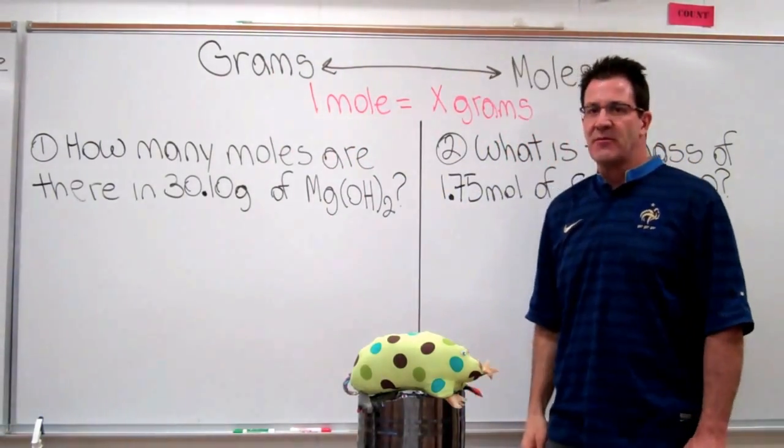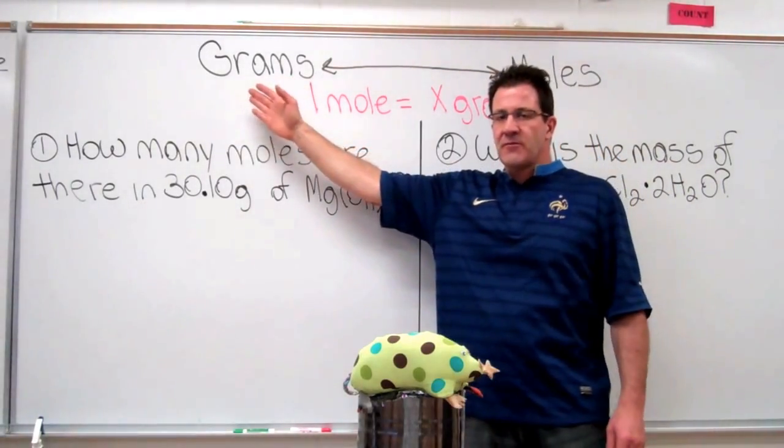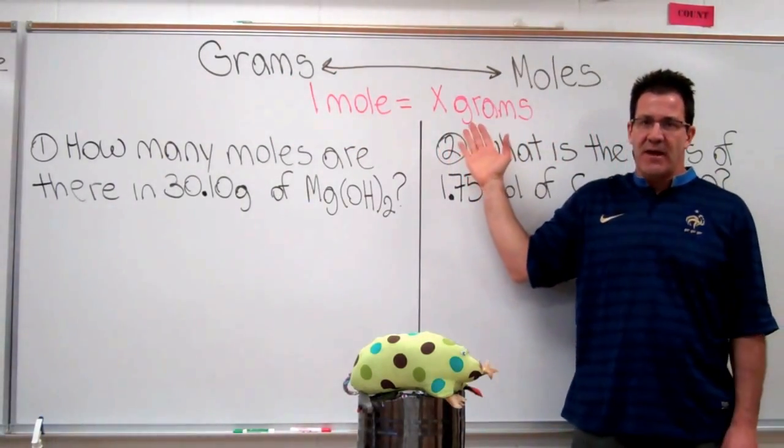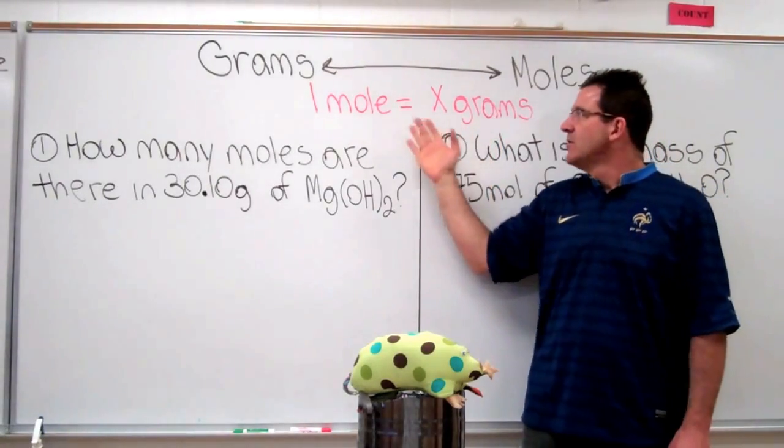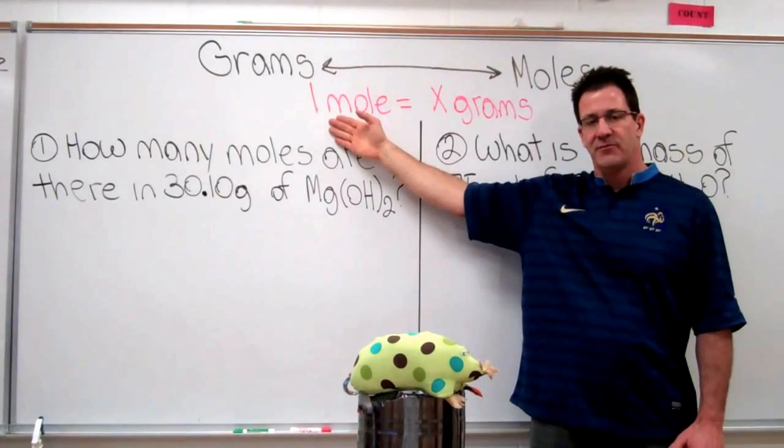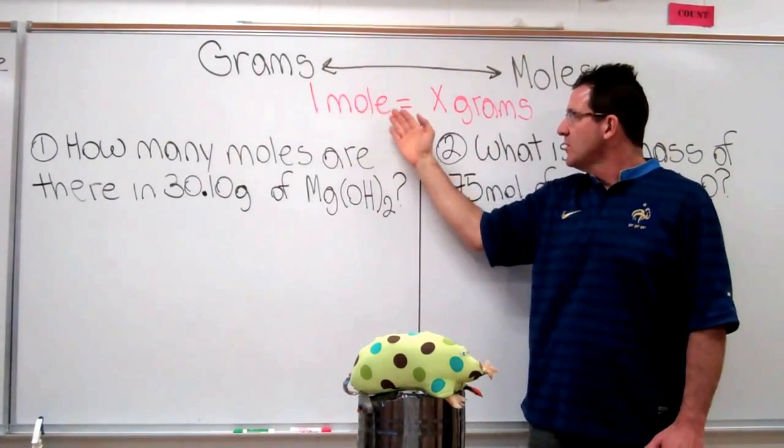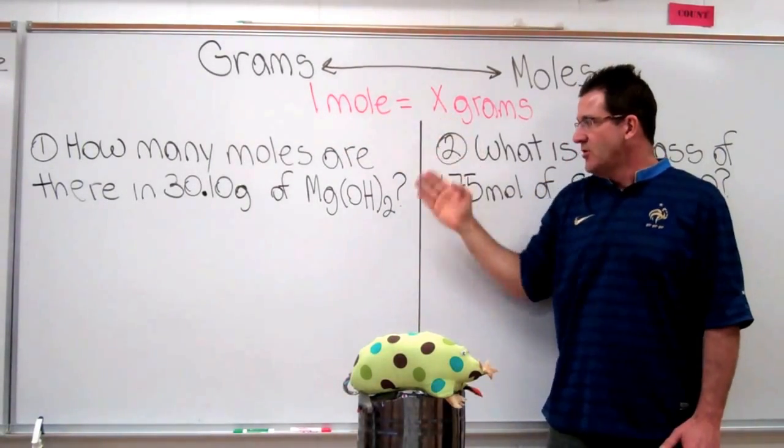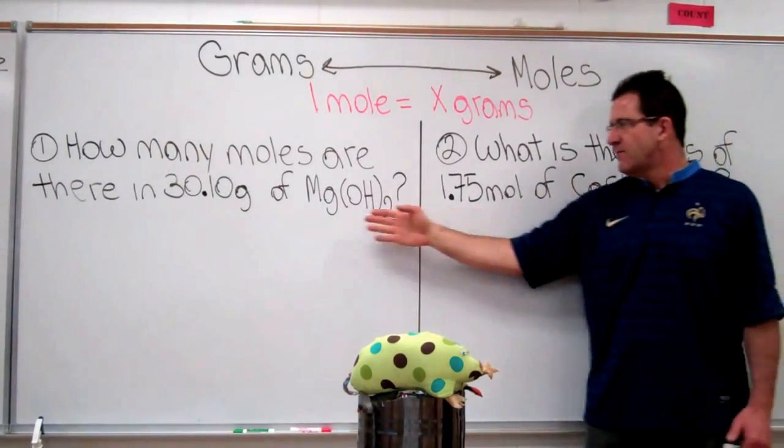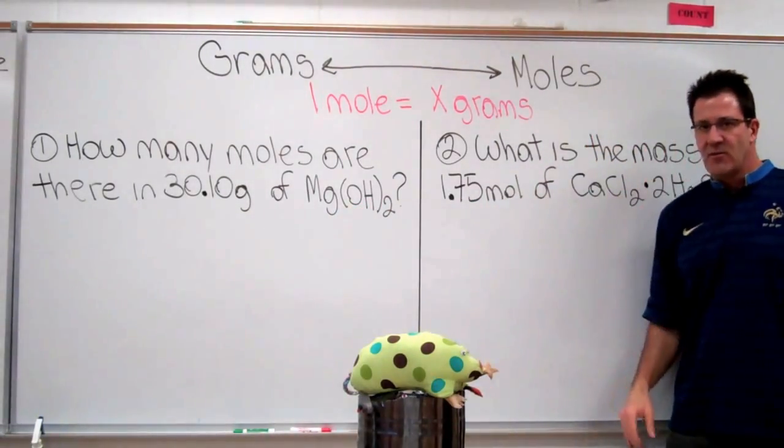Alright, now the first thing you have to remember is when you calculate or convert from grams to moles or moles to grams, you have to use the molar mass of the compound that you're trying to convert. So here I wrote the generic form for the molar mass: one mole is equal to x number of grams. You need to remember that every compound has a different molar mass, and before you start you actually have to calculate the molar mass.